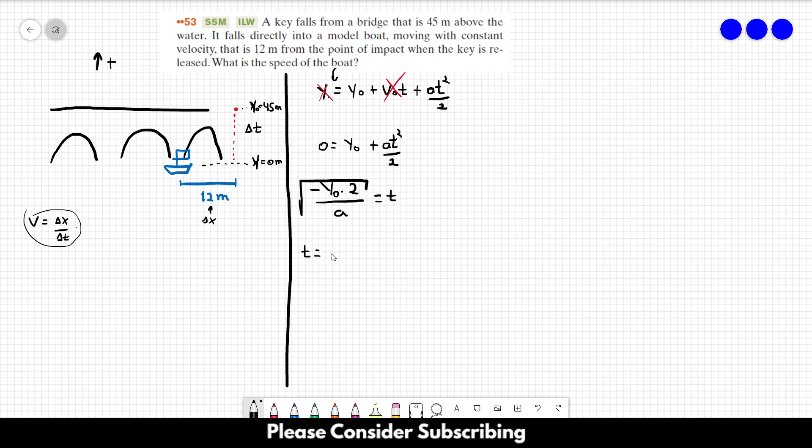So t equals the square root of minus 45 times 2 over minus 9.8. And then we find that this is roughly 3.03 seconds. So this is delta t, and we can just use it.